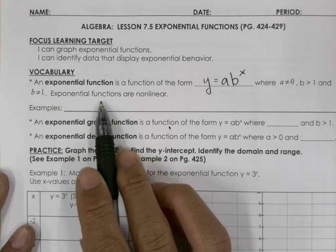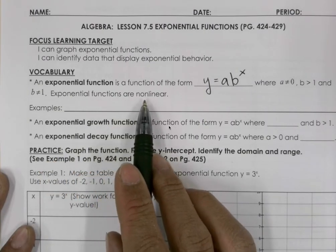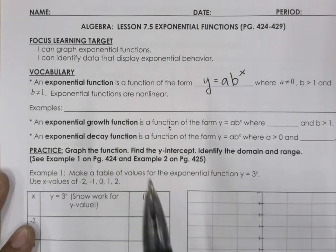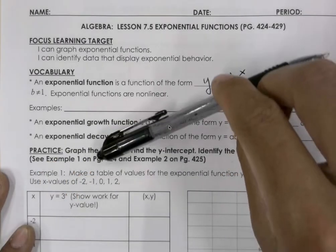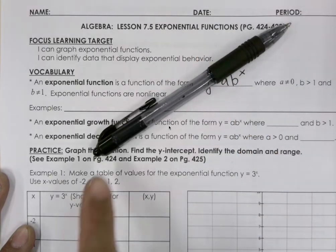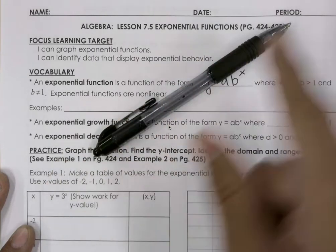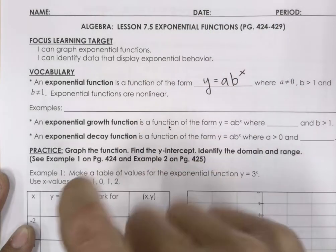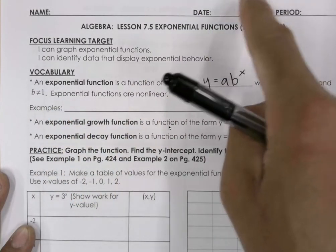Exponential functions are non-linear. Exponential functions do not form a line — they form a curve.